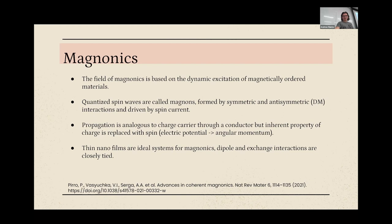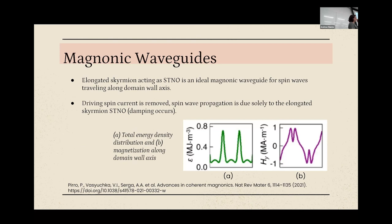Tying the two together: the elongated skyrmion acting as a nano oscillator has been studied as an ideal magnetic wave guide for spin waves traveling along the domain wall axis. As we saw, there is that oscillating magnetization of the spin wave. Once the driving spin current that gets the elongated skyrmion going is removed, you have a damping effect and the spin wave dies off — but for the time being you have generated a bit. This shows the total energy distribution and magnetization along the wall axis over one period.